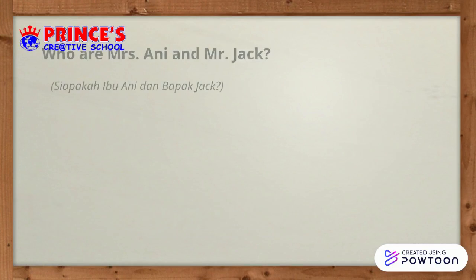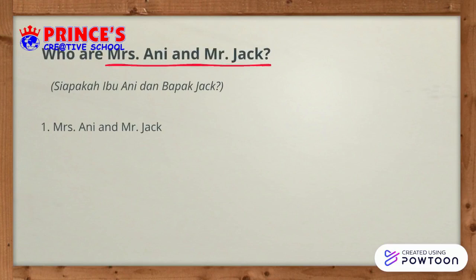Then for the question with more than one subject, like: Who are Mrs. Annie and Mr. Jack? Like usual, we put the subject first — there are two subjects: Mrs. Annie and Mr. Jack. Then the to-be 'are', because there are more than one subject we use 'are'. And the answer: my parents. So the complete answer is: Mrs. Annie and Mr. Jack are my parents.